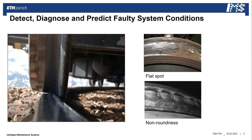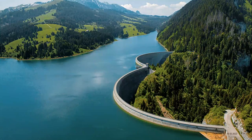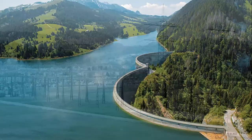We don't only want to diagnose or distinguish between fault types — we would also like to predict how, for example, this non-roundness condition is evolving over time. This is the most important information because then we can react to it proactively. We're also looking into more complex systems such as aviation systems, hydropower plants, and power networks.